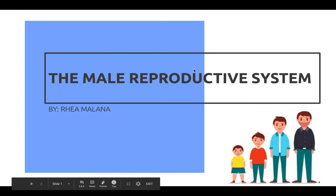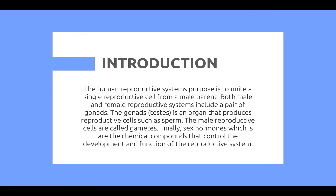My seminar is on the male reproductive system. The purpose of the human reproductive systems is to unite a single reproductive cell from a male parent. Both male and female reproductive systems include a pair of gonads. The gonads, which are testes, are organs that produce reproductive cells such as sperm. The male reproductive cells are called gametes.